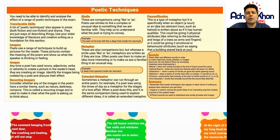Imagery: Poets use a range of techniques to build up pictures for the reader. These pictures contain the meaning of the poem and show us what the speaker is thinking or feeling. Anytime a poet has used nouns, adjectives, verbs, or adverbs to create a picture in the reader's head, they're creating imagery. You can identify and discuss the effects of these particular images.